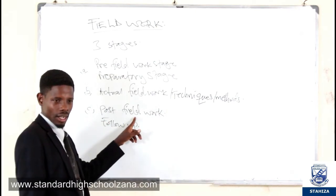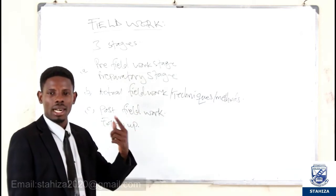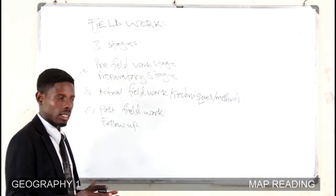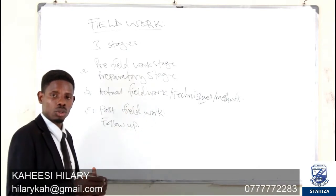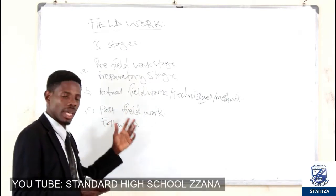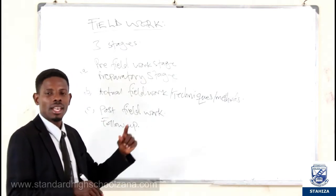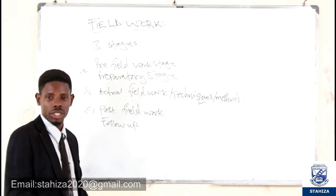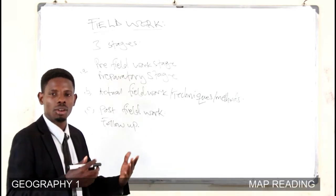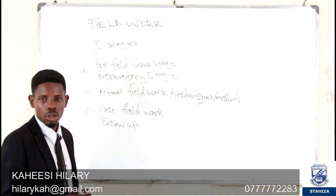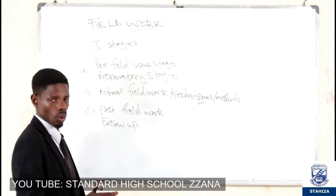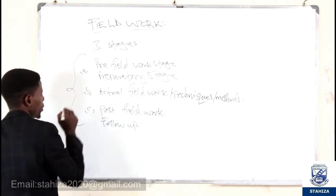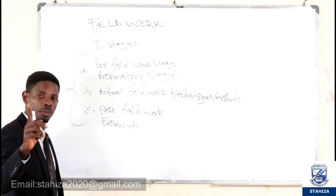After correcting your data, you come back to class — that is the post-fieldwork stage. You internalize and analyze your data, polish the sketch maps in case you drew them incorrectly, compare your data with what group members collected, write a report, disseminate the report to different stakeholders, and make recommendations about what you saw in the field. These three stages make up what we call fieldwork.